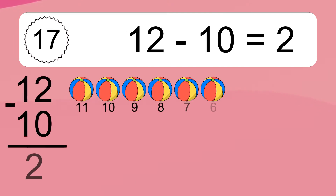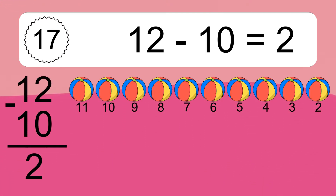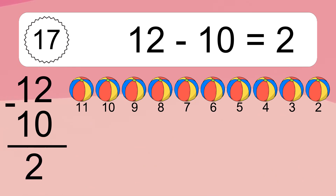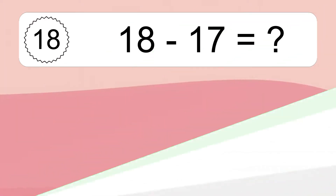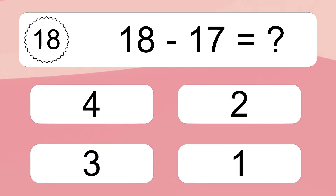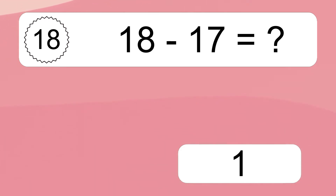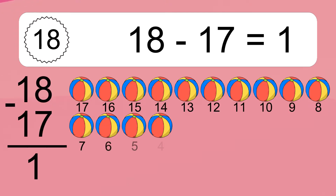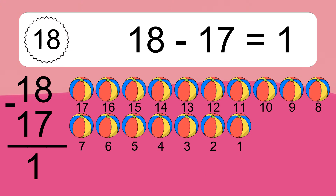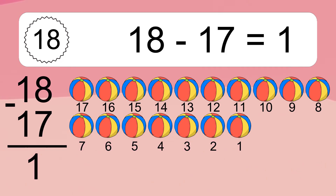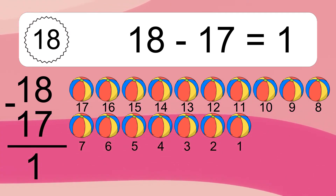12 minus 10 equals 2. Let's count it: 11, 10, 9, 8, 7, 6, 5, 4, 3, 2. 18 minus 17 equals what? 18 minus 17 equals 1. Let's count it: 17, 16, 15, 14, 13, 12, 11, 10, 9, 8, 7, 6, 5, 4, 3, 2, 1.